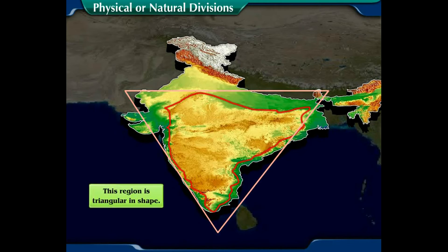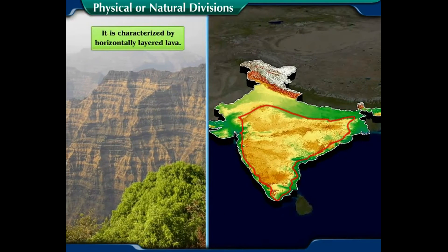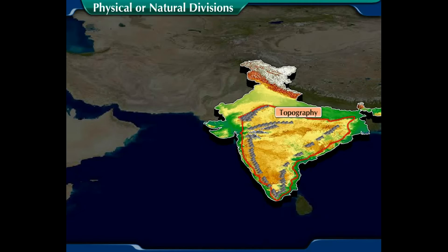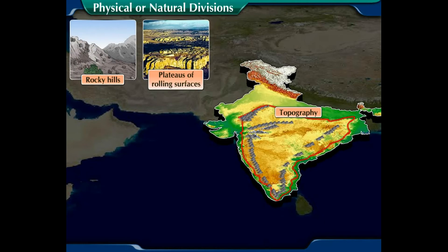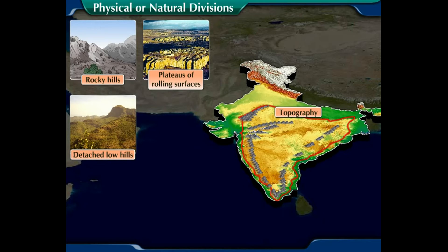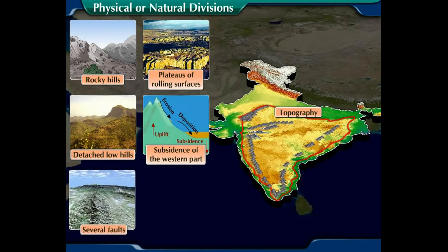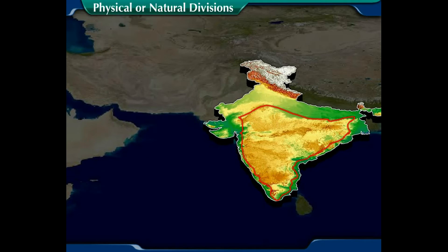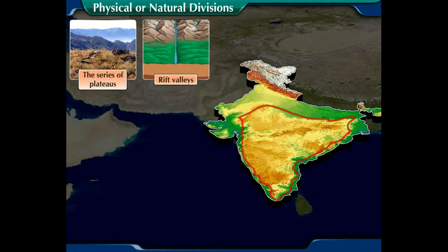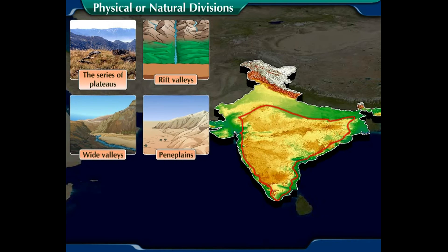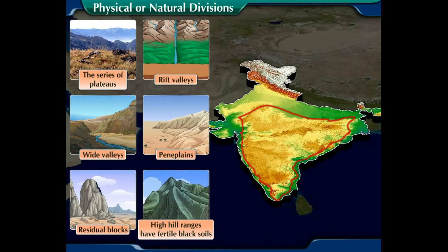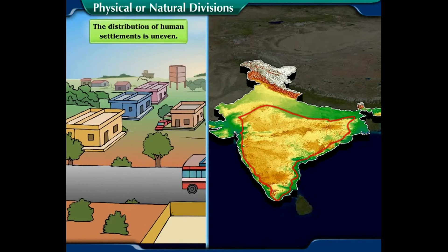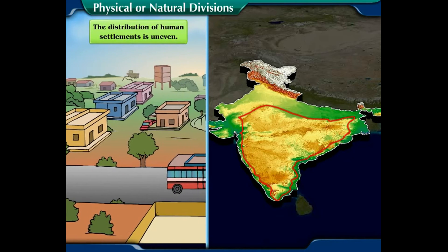Number three, this region is triangular in shape. Number four, it is characterized by horizontally layered lava. Number five, step-like topography, rocky hills, plateaus of rolling surfaces, detached low hills, subsidence of the western part, and several faults, fractures, and gently rising hills are found here. Number six, a series of plateaus, rift valleys, wide valleys, peneplains, residual blocks, and high hill ranges have fertile black soils and rich mineral resources. Number seven, the distribution of human settlements is uneven.